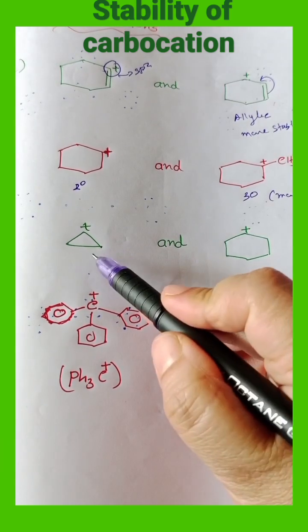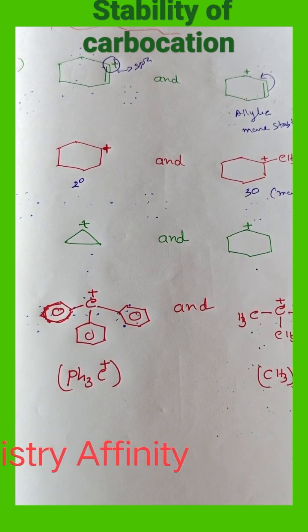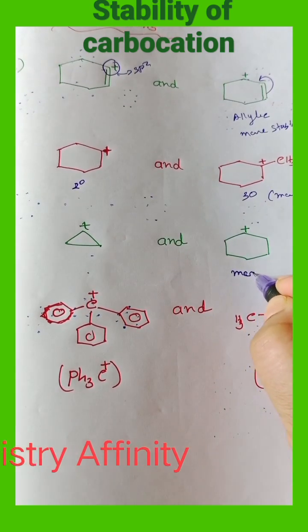Next, here it is a cyclopropyl carbocation. It is a cyclohexyl carbocation. We know the 6 member ring is more stable than the 3 member ring. So it will be more stable.